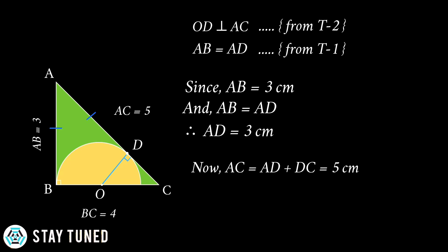Further, AC is the sum of AD plus DC, which equals 5 cm. Therefore, DC will equal AC minus AD, which is 5 cm minus 3 cm. This implies that DC is equal to 2 cm.